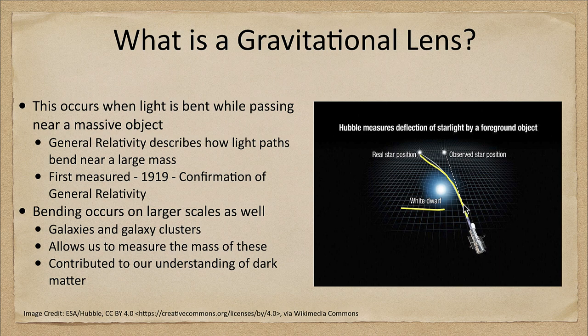So when we look out, we see it as coming from this position instead of its actual position over here. This was actually measured in 1919 during a solar eclipse, looking at positions of stars behind the eclipsed sun and noting that their positions were different than they were six months before when the sun was not in that area.